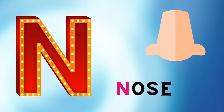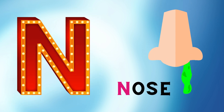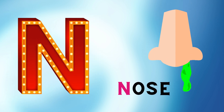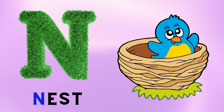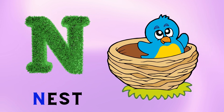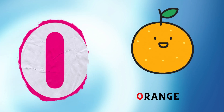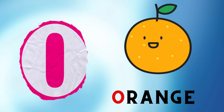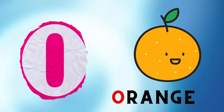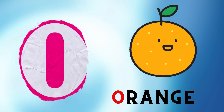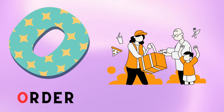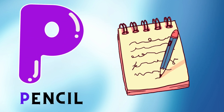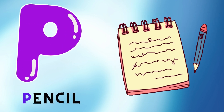N is for Nose. N, N, Nose. N is for Nest. N, N, N, Nest. O is for Orange. O, O, Orange. O is for Otter. O, O, Otter.